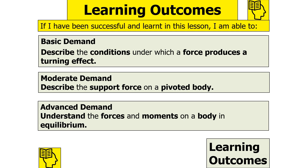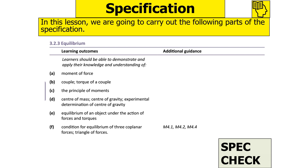If we've been successful in today's lesson, we should be able to describe the conditions under which a force produces a turning effect, describe the support force on a pivoted body, and understand that the forces and moments on a body can be in equilibrium. We're going to be looking at OCR A-level physics specification 3.2.3 — equilibrium in particular, moment of force, and the principle of moments.